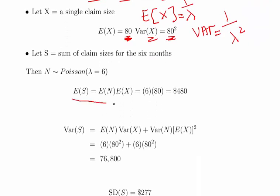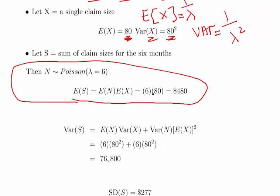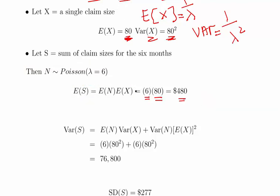Let S be the sum of claim sizes for six months. The expected value of S is 6 × 80 = $480. That's fairly intuitive: we expect six claims at $80 each.